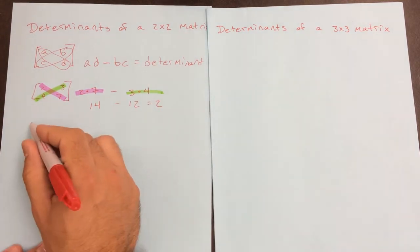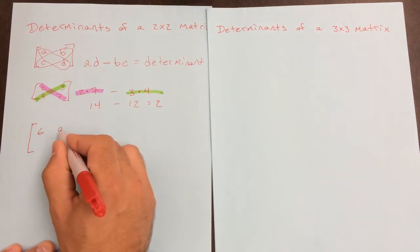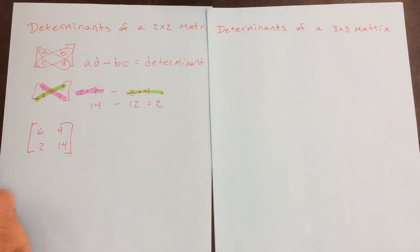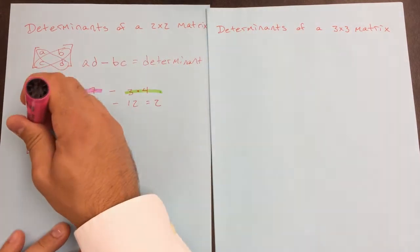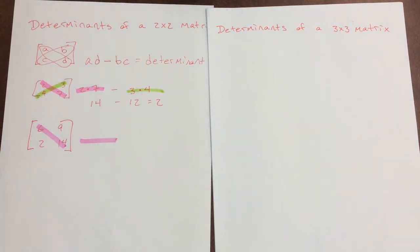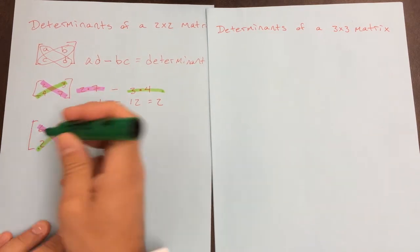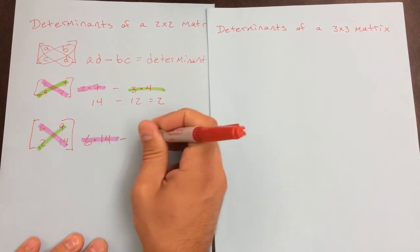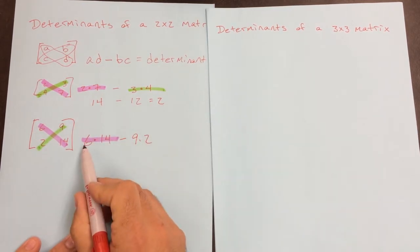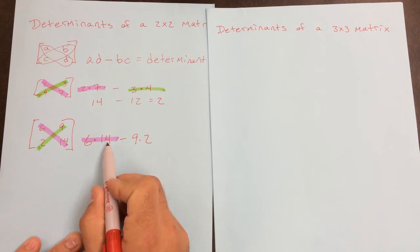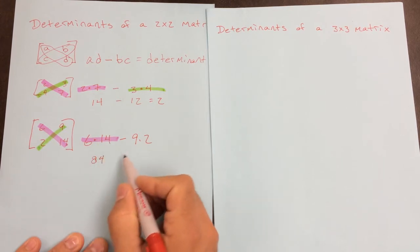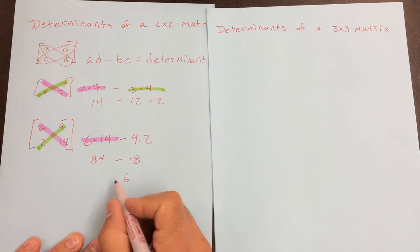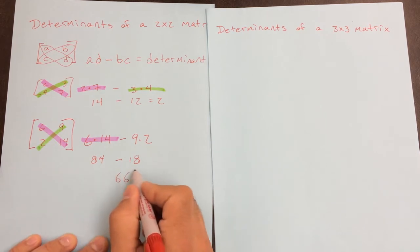It's as simple as that — no matter what the numbers are, just follow that process. So I'm going to do 6 times 14 minus 9 times 2. That's going to give me 84 minus 18, which gives me 66. Determinant equals 66.